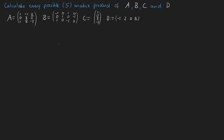We have given 4 different matrices A, B, C and D and our task is to calculate every possible matrix product of those 4 matrices. As a hint, we know that there are 5 different possibilities to multiply those matrices.